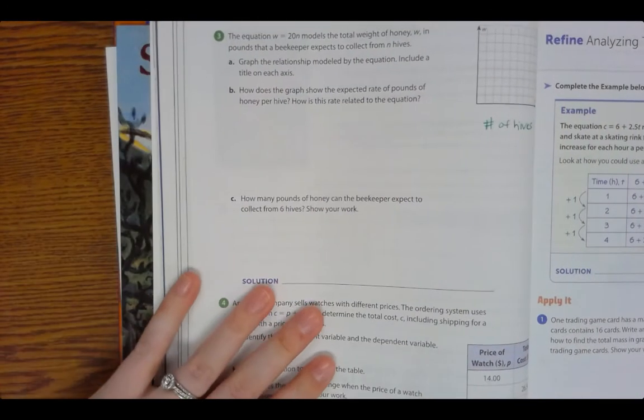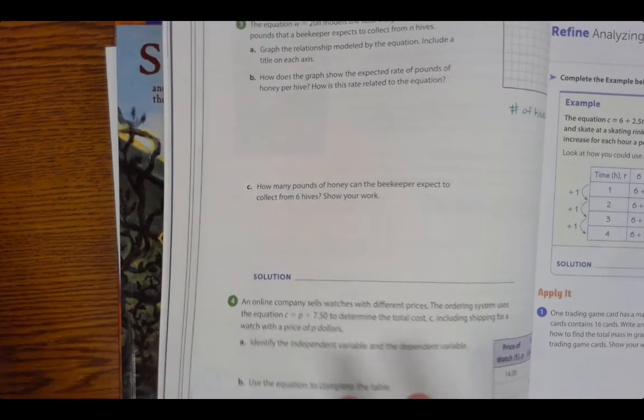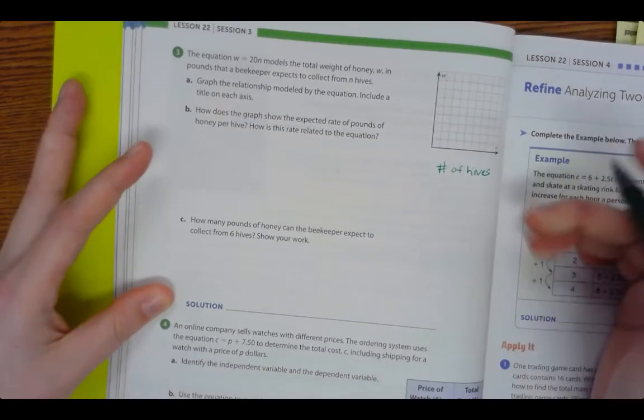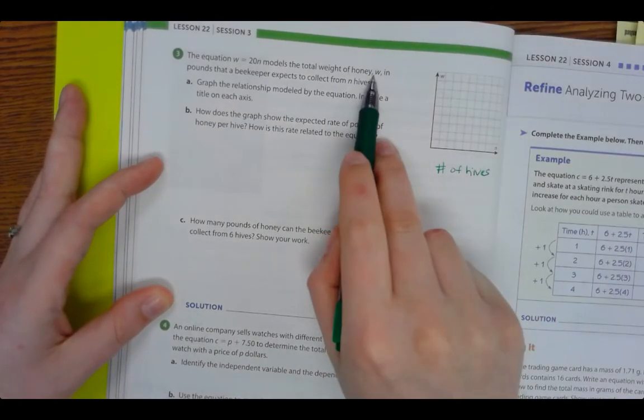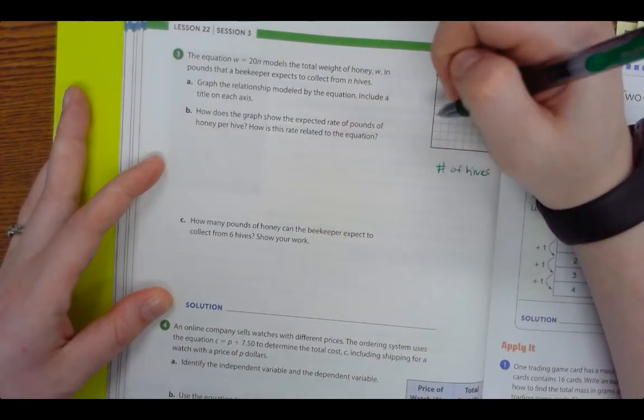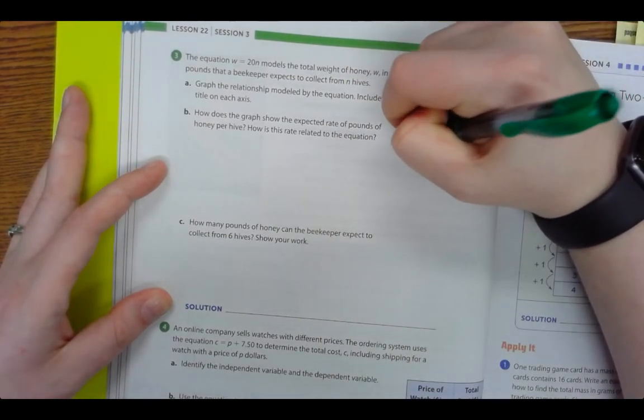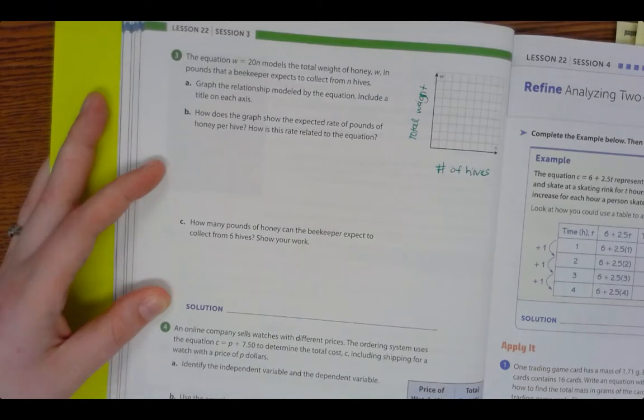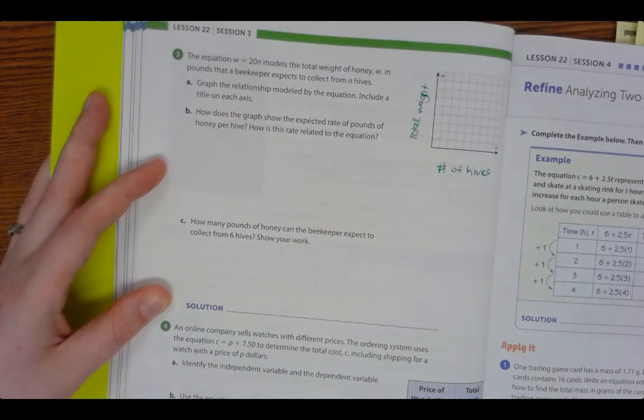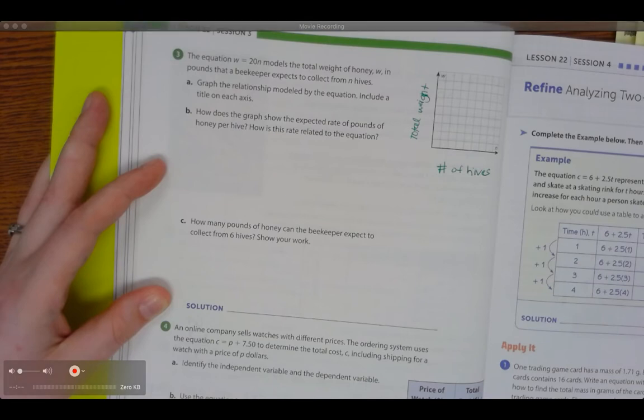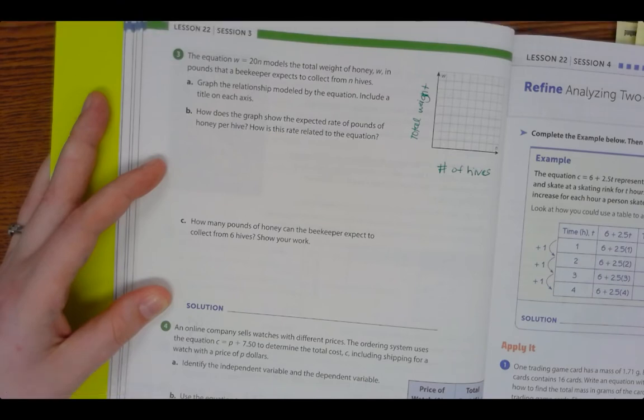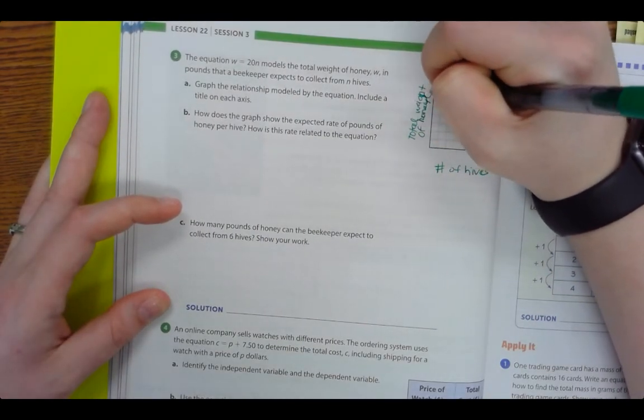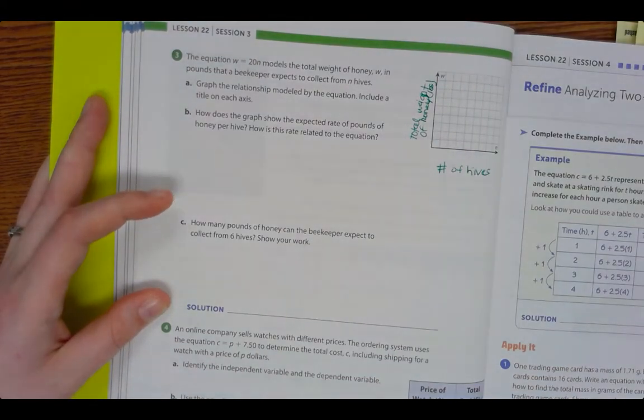Number of hives. And then we're going to say that W is the total weight of honey. And then we know that we're going to measure total weight of honey in pounds.